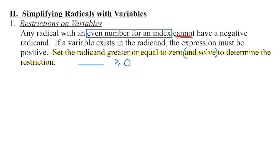Anytime we have a radical with an even index — a square root, a 4th root, a 6th root, etc. — we know that we cannot have a negative radicand. We have to state the restriction on that variable if there is a variable within that radicand. So we take the entire expression in the radicand, set it greater than or equal to 0, and then solve for that variable to get our restriction.